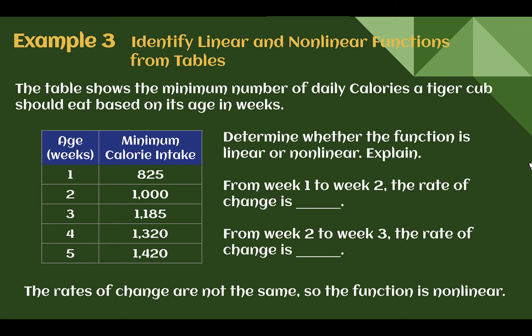Example 3: The table shows the minimum number of daily calories a tiger cub should eat based on its age in weeks. Determine whether the function is linear or non-linear and explain. Check the rate of change: from week 1 to week 2, the calorie intake went up by 175. From week 2 to week 3, it went up 185. Right away those are not the same, so I don't need to check further — this is a non-linear function because the rates of change changed.